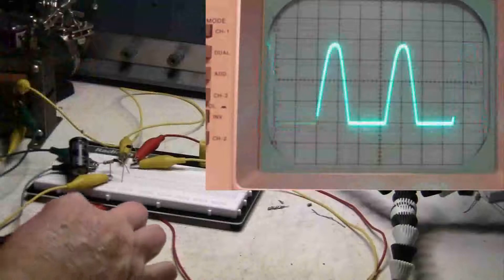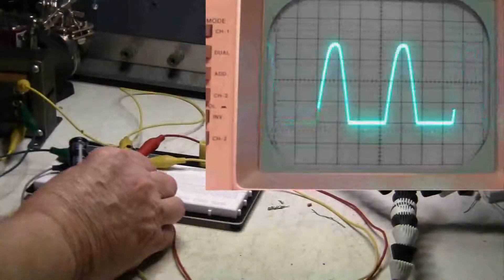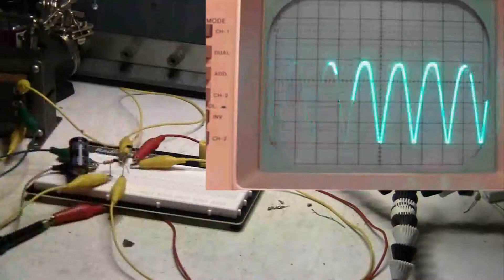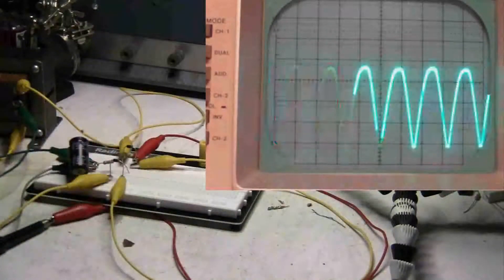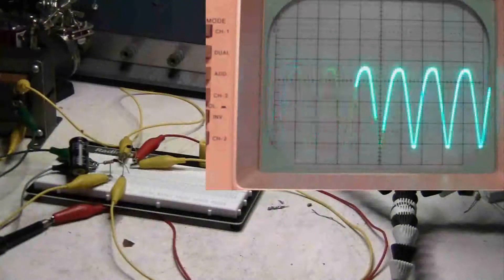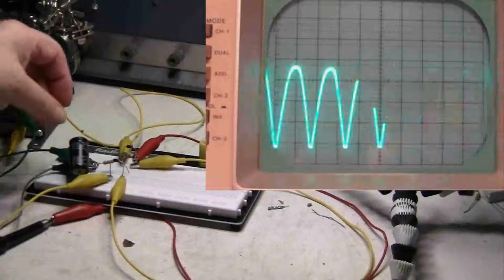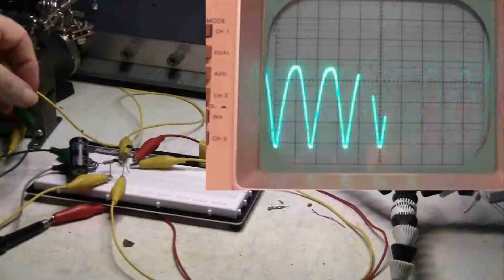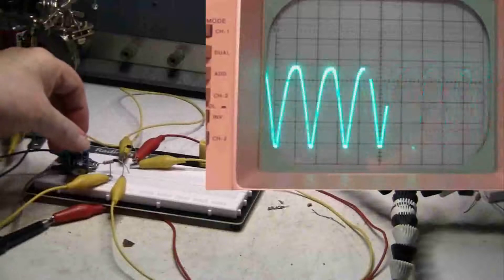Now I'm going to hook up the other half. Now you can see that the peaks in between have been filled in, which means we have about twice as much current.